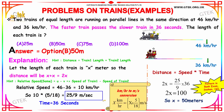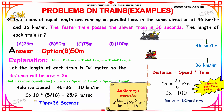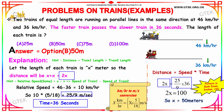The time taken is 36 seconds and the speed is 25 divided by 9 meters per second. Using distance equals speed multiplied by time: 2x equals 25/9 times 36, which gives 2x equals 100. Therefore x equals 50 meters. The length of each train is 50 meters.